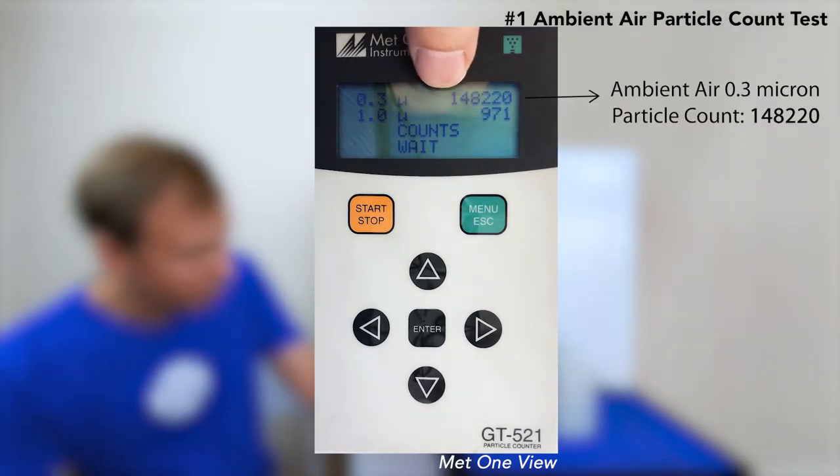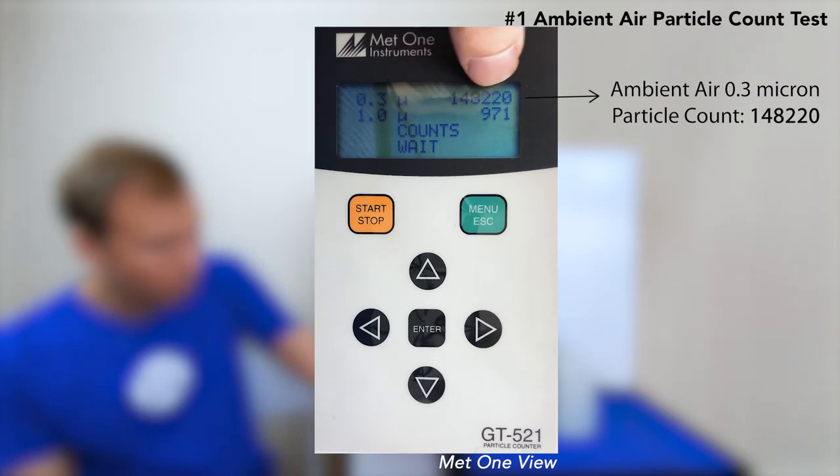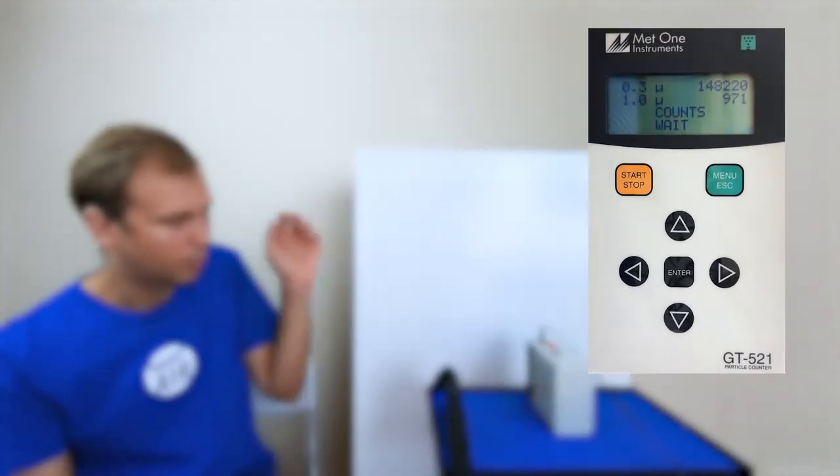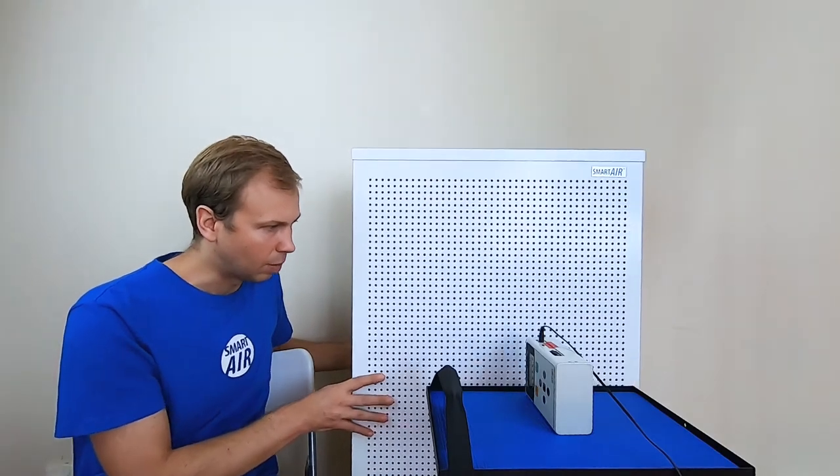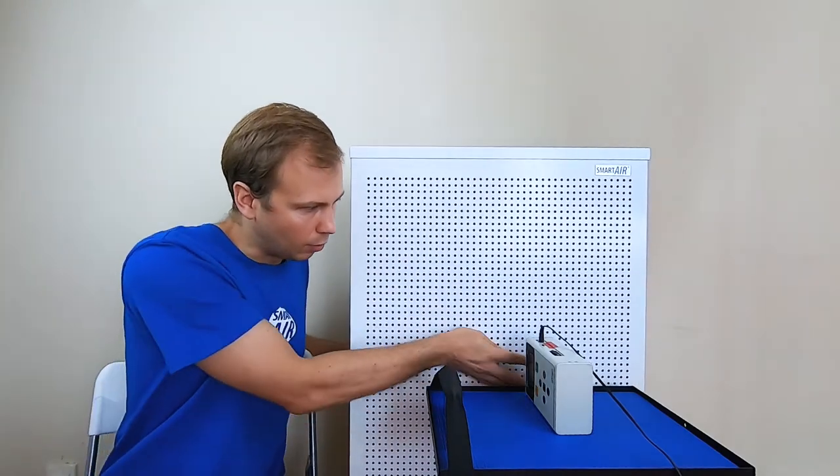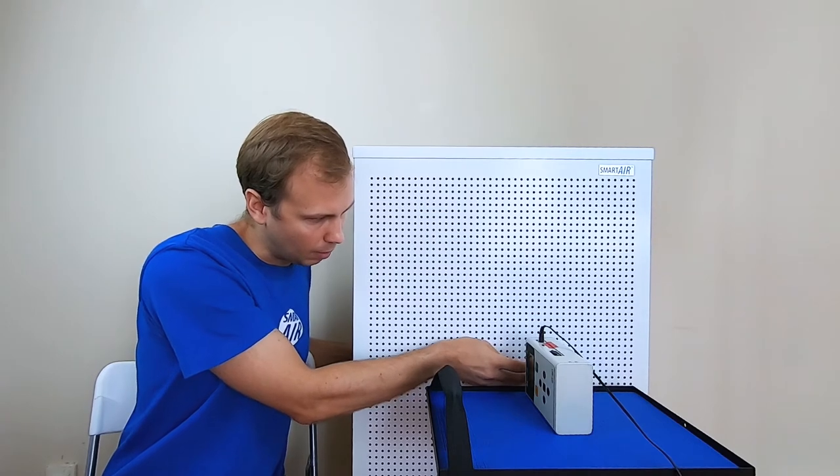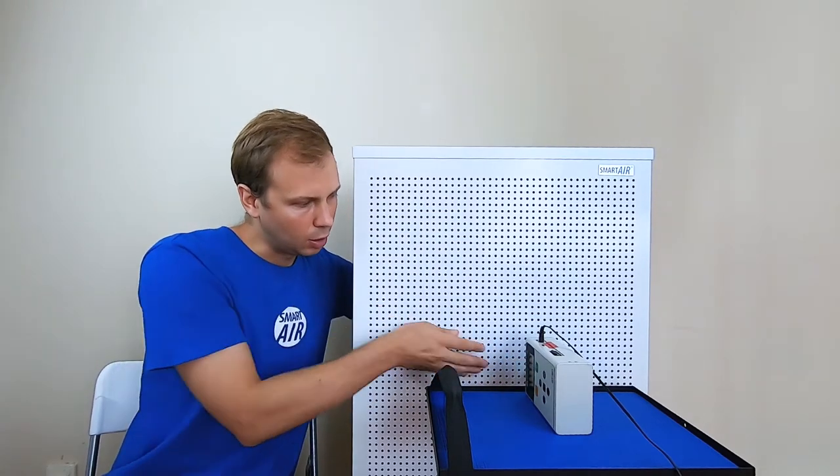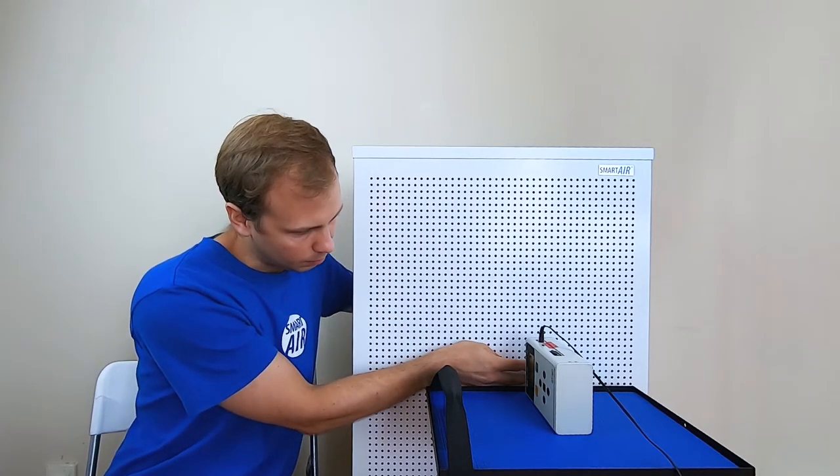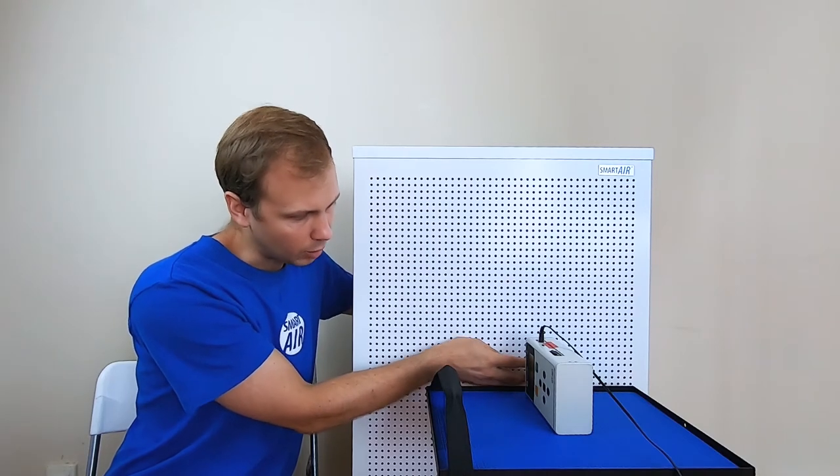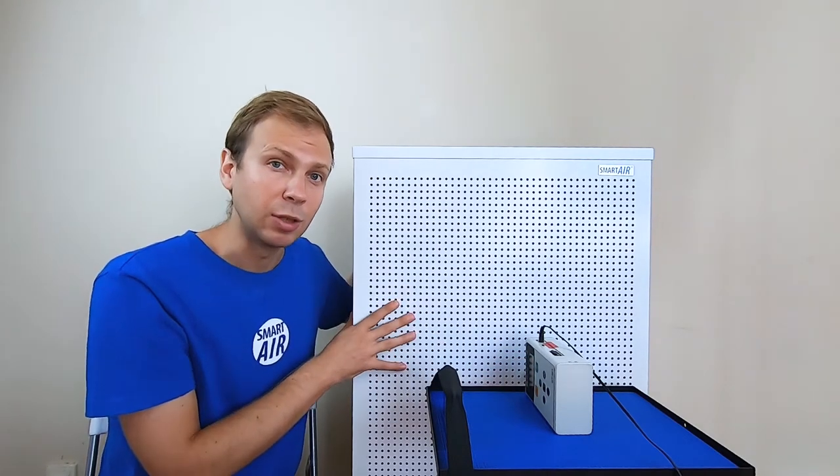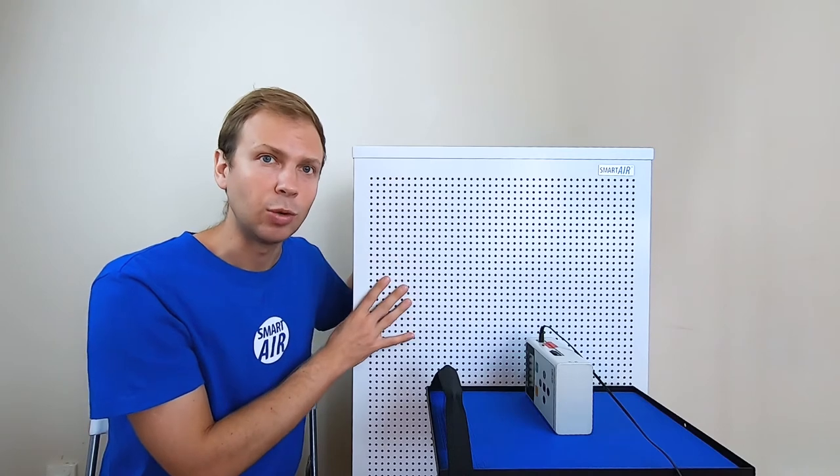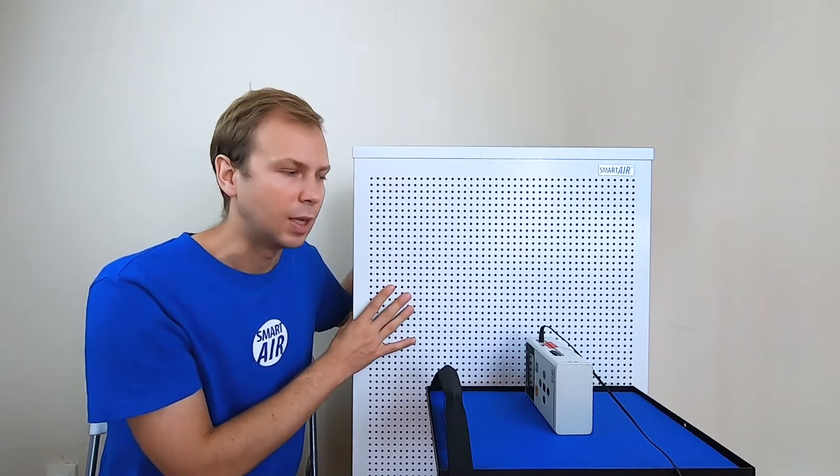For air not passing through the filter, we have a particle count at 0.3 microns of 148,220. The next step is to move the BLAST closer to the MET1 device, make sure we're measuring air coming out of the filter, and turn on the BLAST. This way we can measure the air coming directly out of the filter as it's installed in the BLAST or BLAST Mini air purifier.